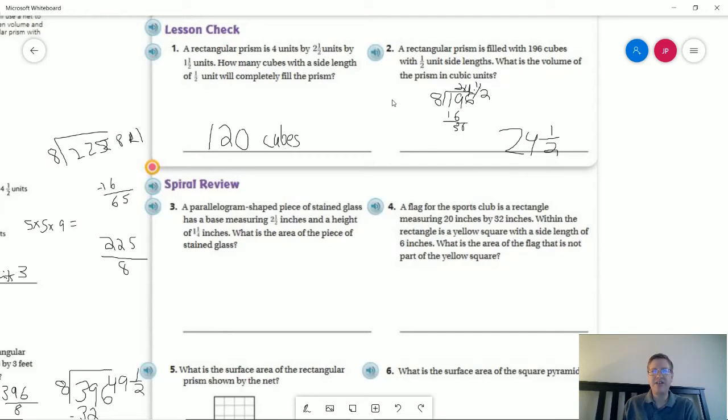Number 2. We want to actually find the volume this time. So we have 196 cubes with one-half size unit. So we can do 196 divided by 8 and that would give us 24 and a half for the volume.